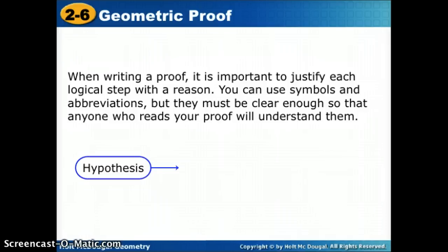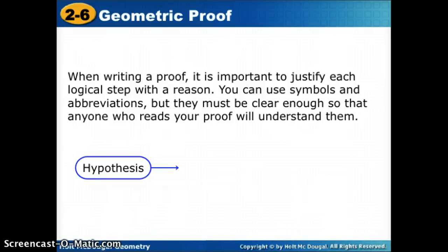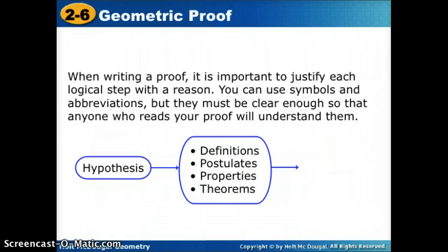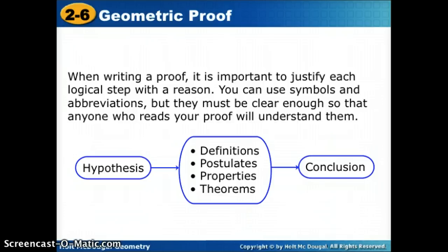With our conjectures — our if-then statements — we always go through the same pattern. We start with the hypothesis, and then we come up with the reasoning so that we can prove the conclusion. We're given some information and asked to prove something, so we start with our hypothesis and prove all the way through.